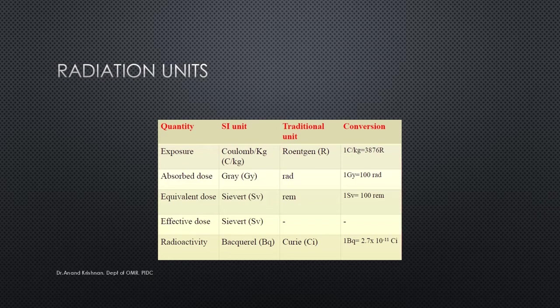Other terminologies we will come across include film speed — E-speed and F-speed films — collimation, collimator, filtration, and various types of filtration such as inherent, added, lead aprons, protection barriers, thyroid collar, radiation monitoring badges, the ALARA concept, and beam alignment devices. These terminologies will commonly appear throughout this lecture and we will see them elaborately as we go on.